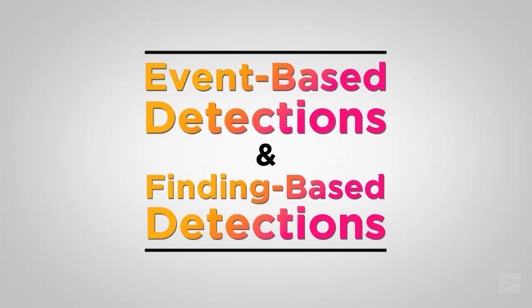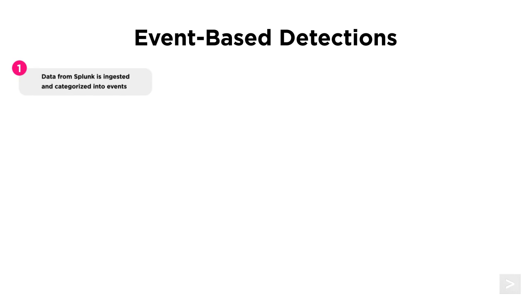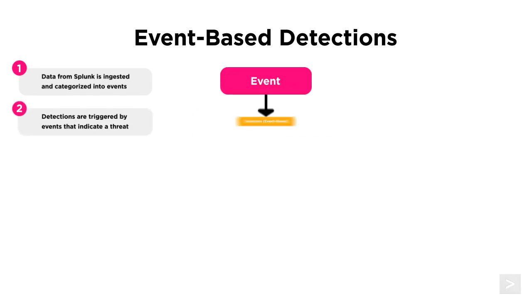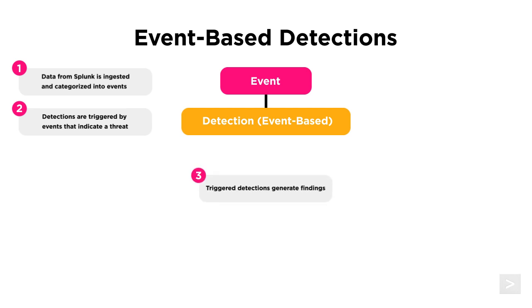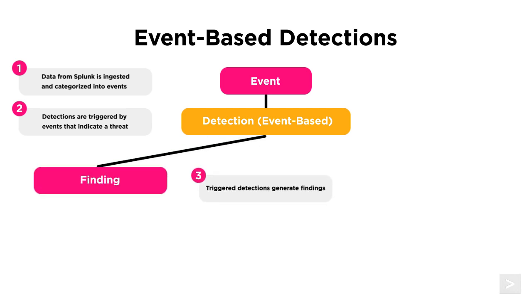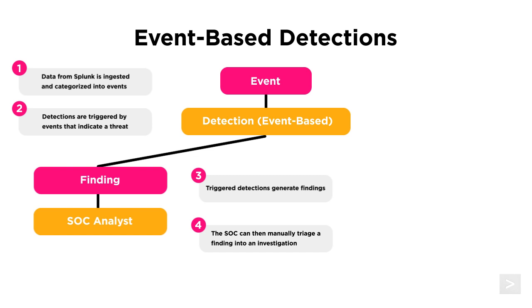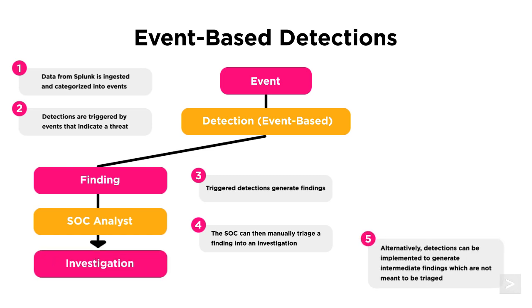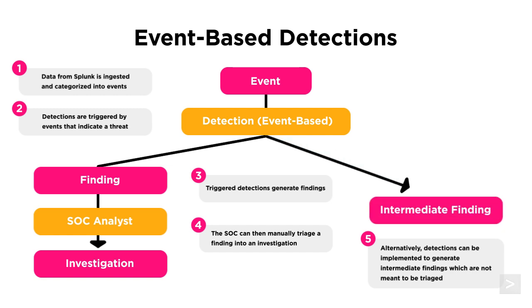As noted in the taxonomy charts, Splunk Enterprise Security 8.0 introduces two new detection types. Let's begin with event-based detections. Data from Splunk is ingested and categorized into events. Detections are triggered by events that indicate a threat, then generate findings. The SOC can then manually triage a finding into an investigation. Alternatively, detections can be configured to generate intermediate findings, which are not meant to be triaged and do not show up in the queue.